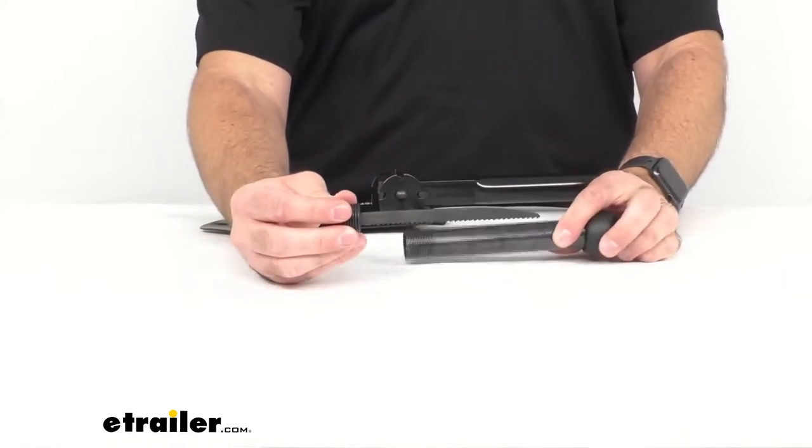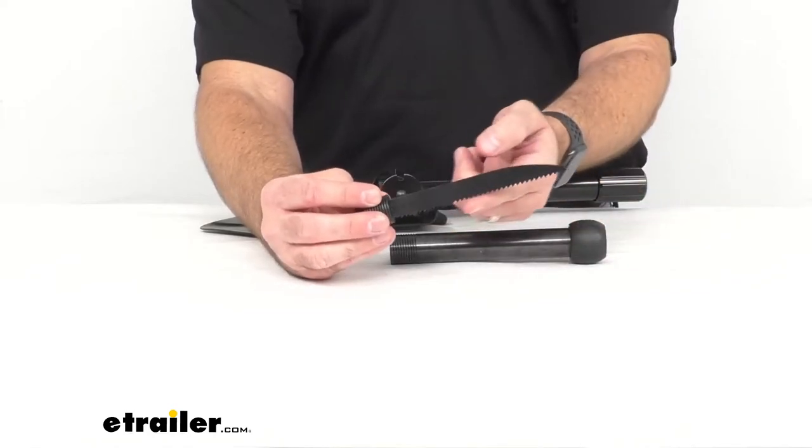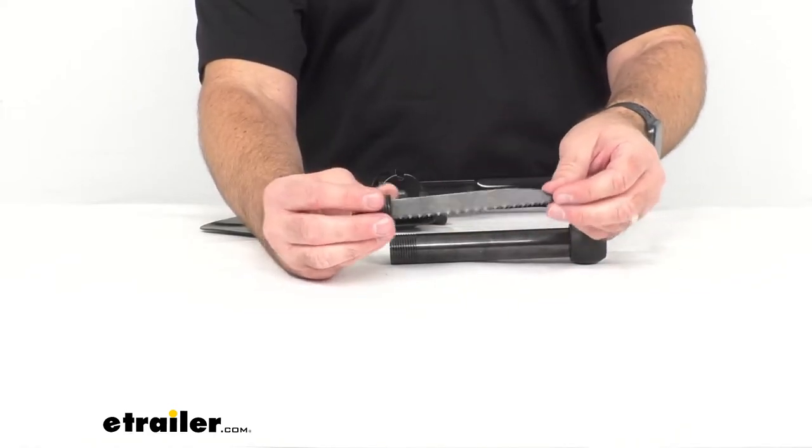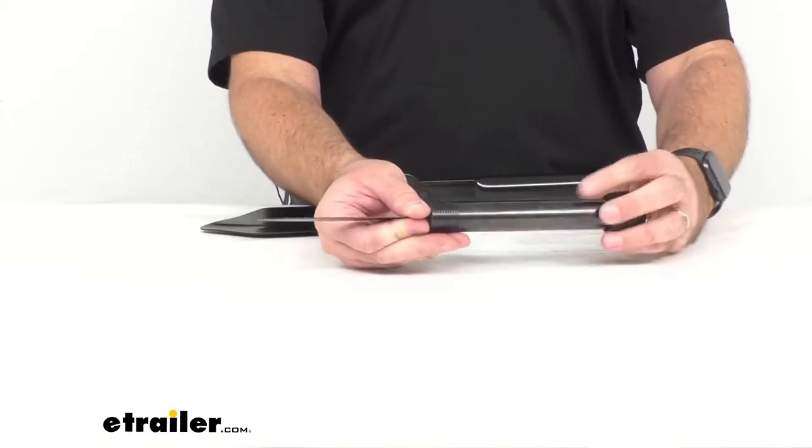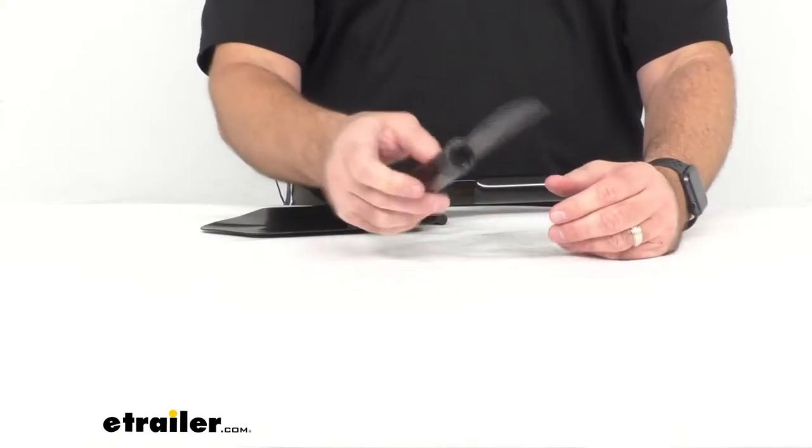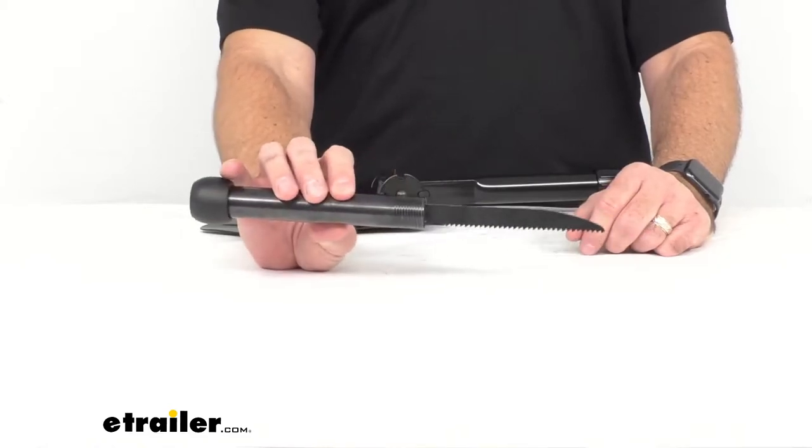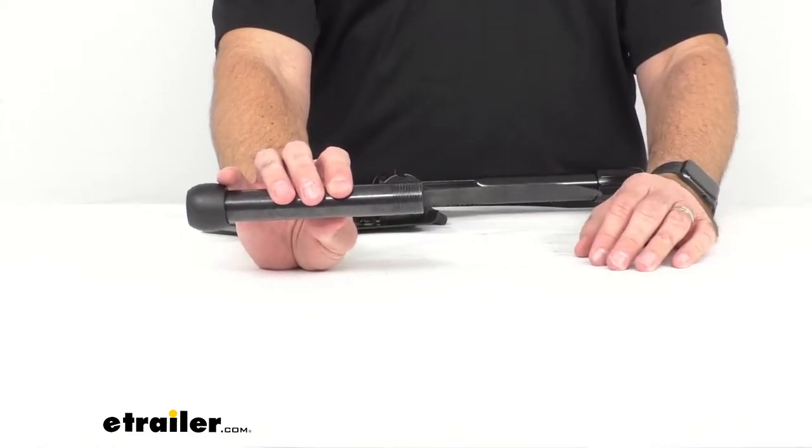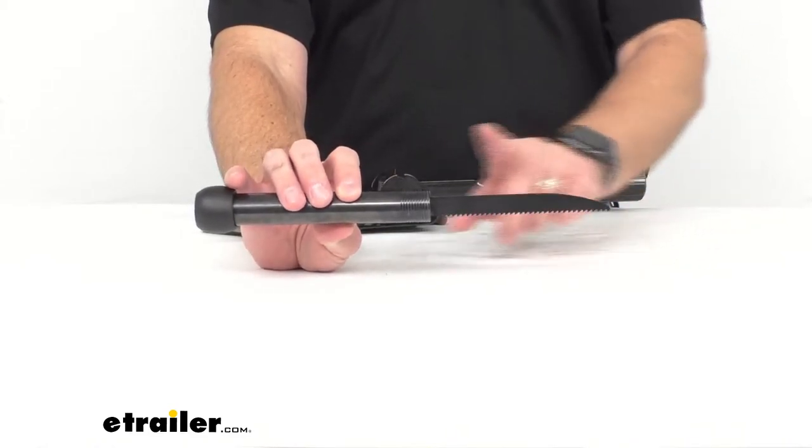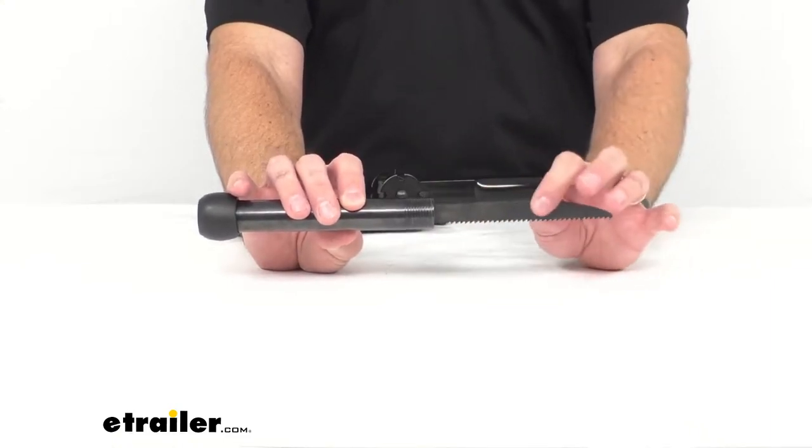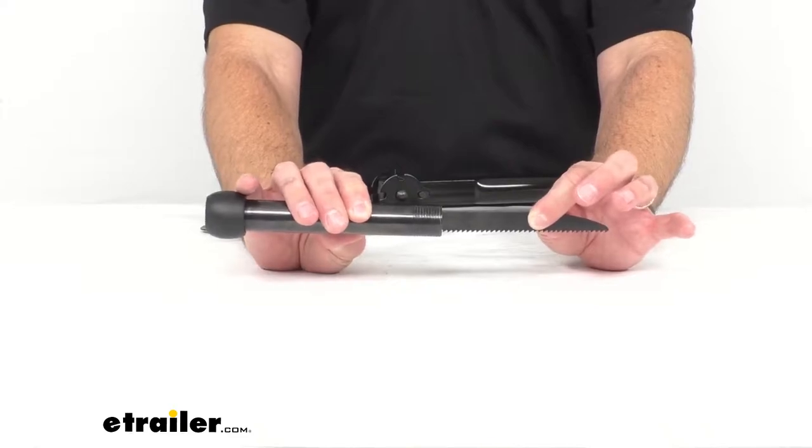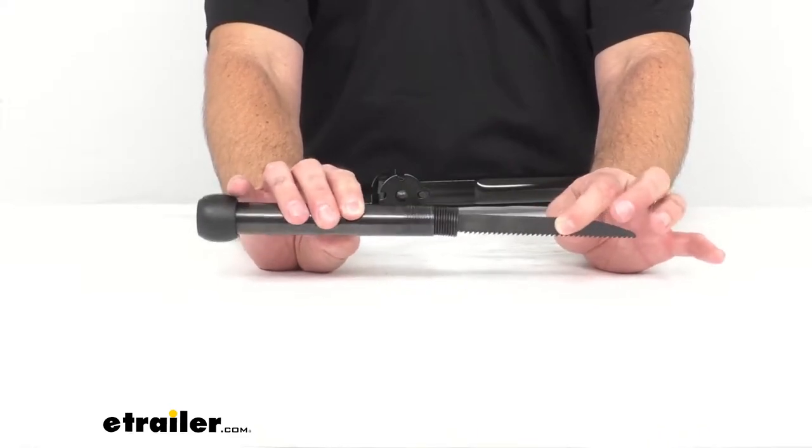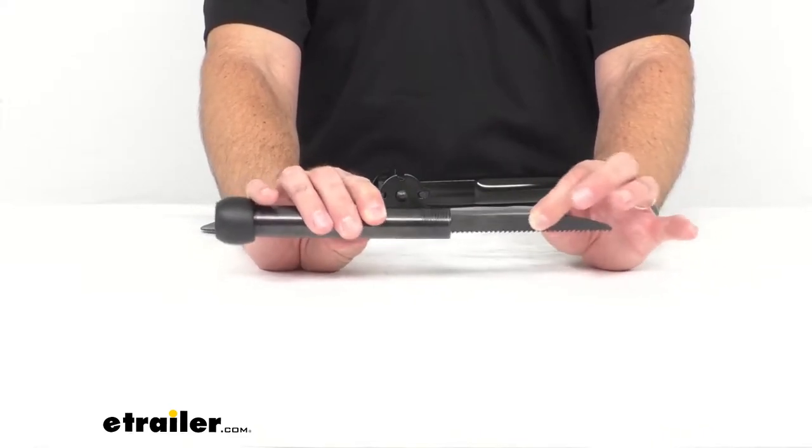So there's the saw blade and the saw blade is relatively sharp and then you're supposed to screw it back into the handle. Now I will let you know, I'm not real impressed with how this works. The idea is you screw this into the handle and it's going to be secure and it is anything but secure.